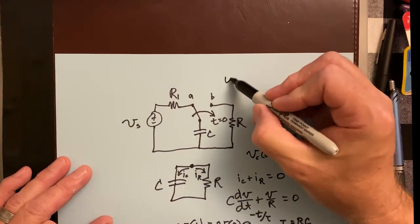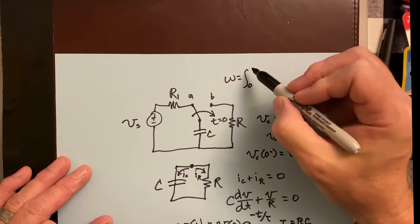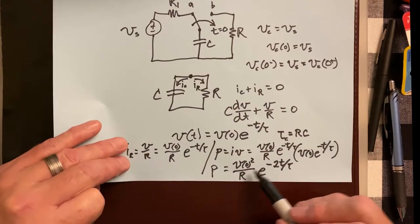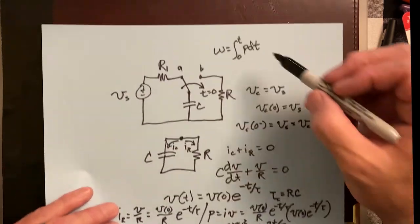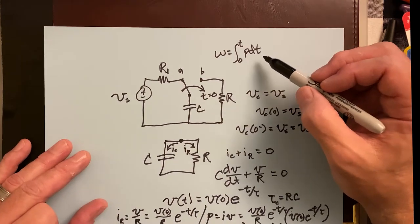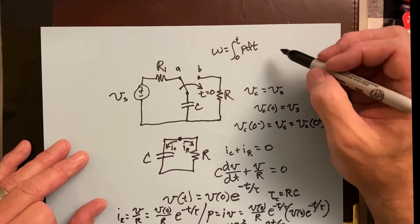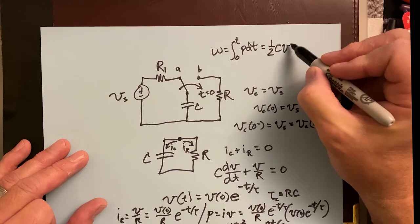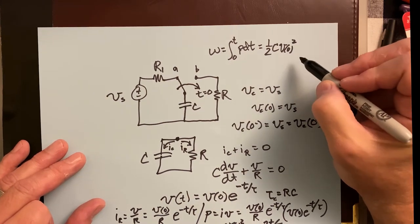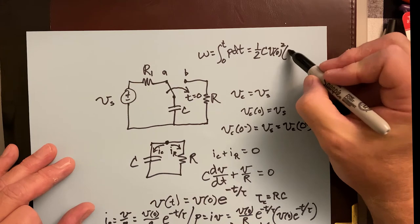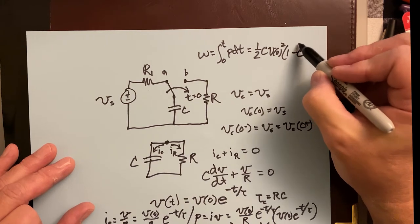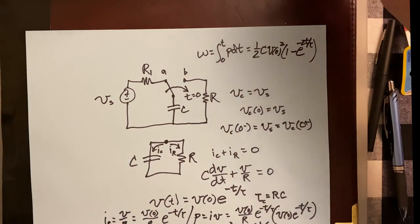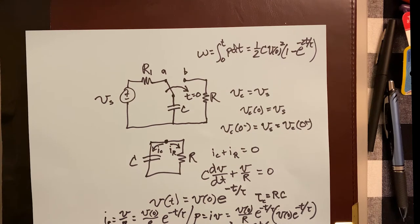For energy, we integrate power from zero to time t. Plugging in the power expression and integrating gives the energy: W = ½·C·V(0)² · (1 - e^(-2t/τ)).